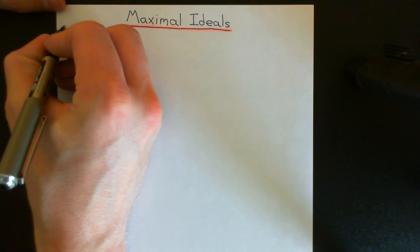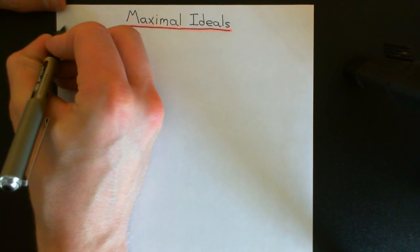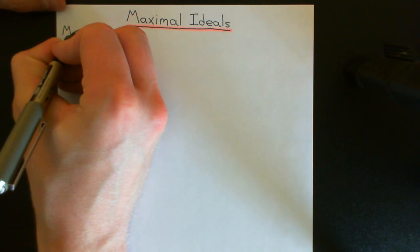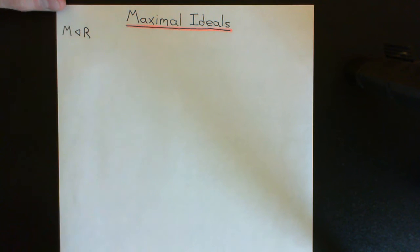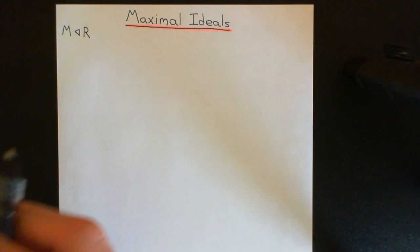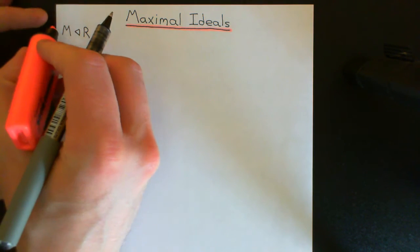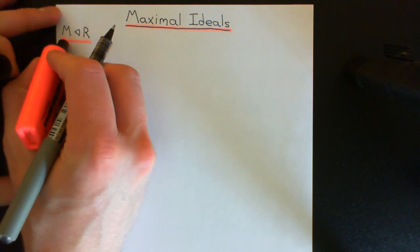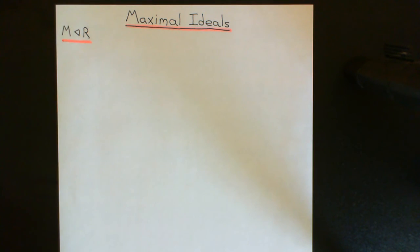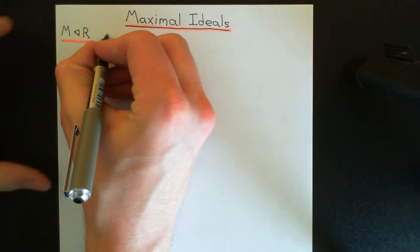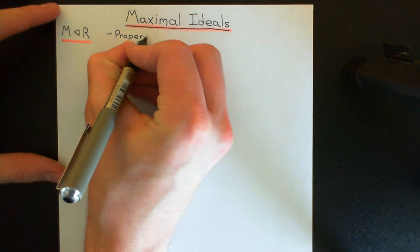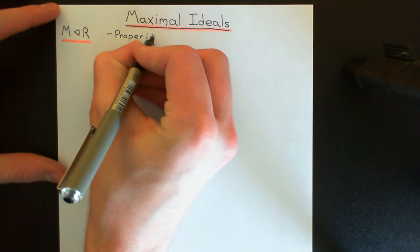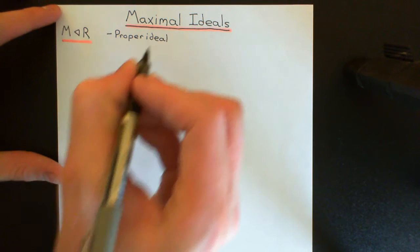A maximal ideal of a ring, which we'll denote capital M, is going to first and foremost just be an ideal of the ring, capital R. And it's going to be a proper ideal — so it's not going to be equal to the unit ideal, it's not going to be equal to the entire ring. So M must be a proper ideal, i.e. not the unit ideal; it must be a proper subset of the ring.